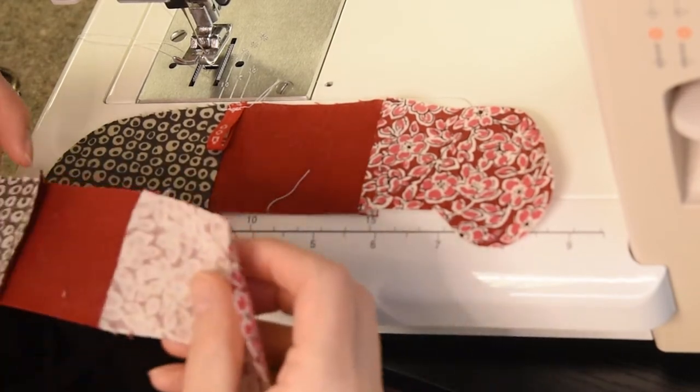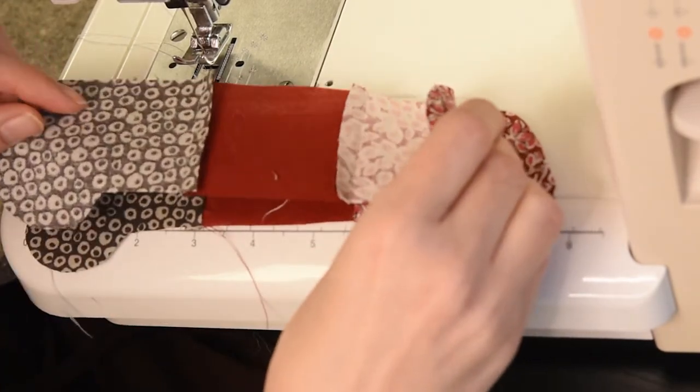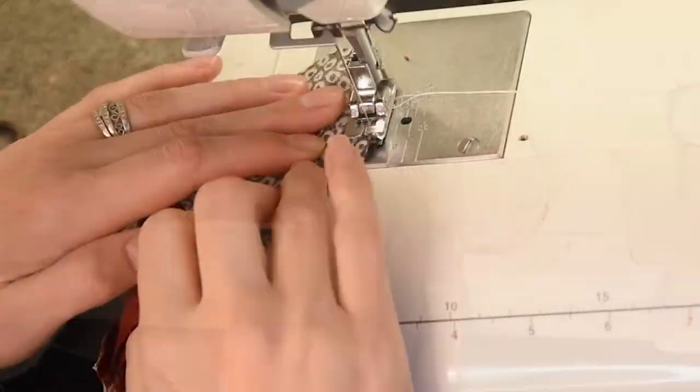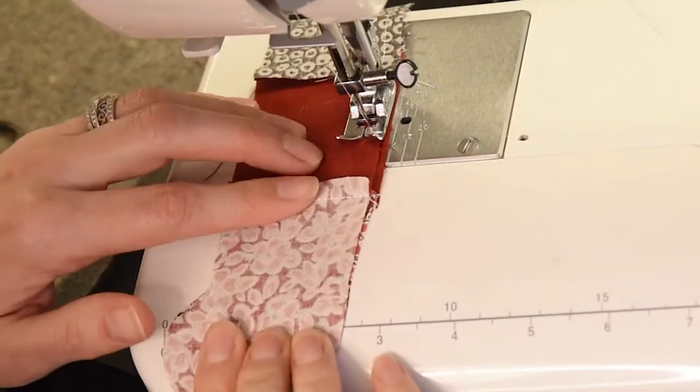Once that's basted you're going to match both your stocking pieces together, right sides together. Make sure that the seams line up and you're going to sew all the way around.